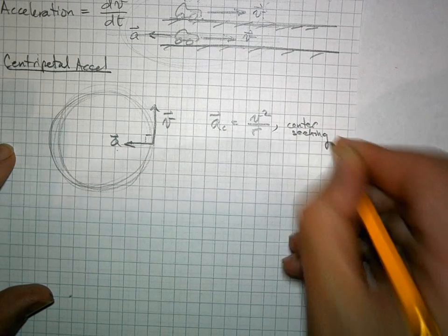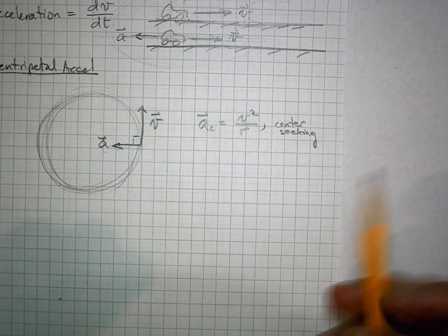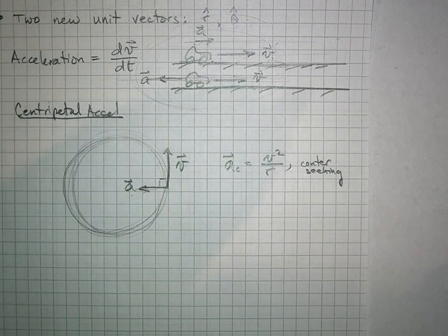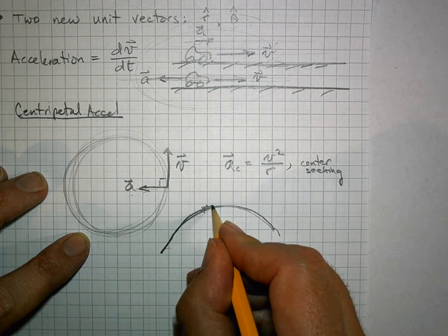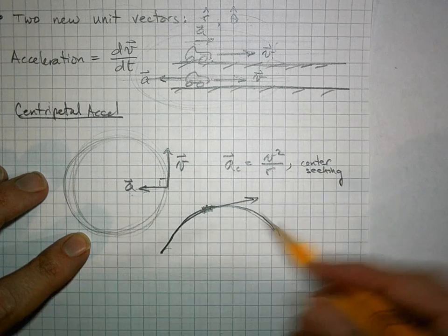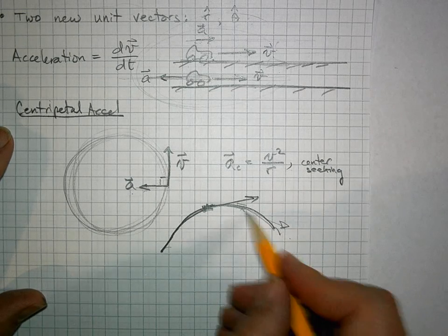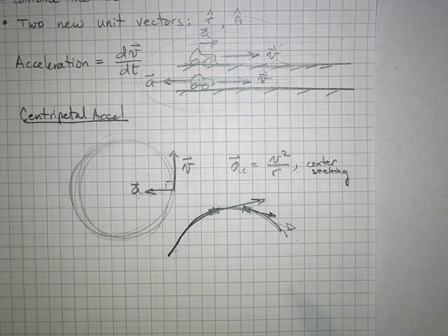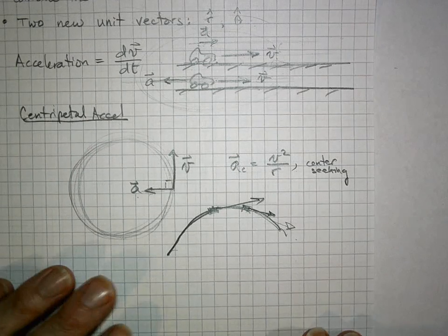In real life, a car can do both at the same time. Imagine going around a turn while braking — you're both turning and decelerating. So as you follow a curved path, your velocity vector changes both in direction and in magnitude. We need a way to describe this combined acceleration that accounts for both changing direction and changing speed simultaneously.